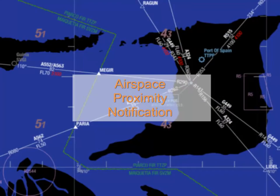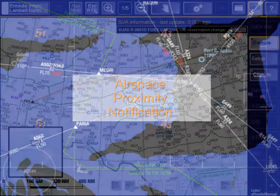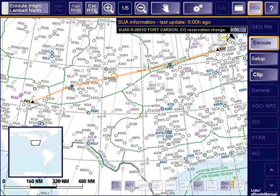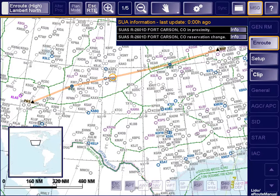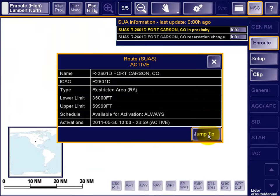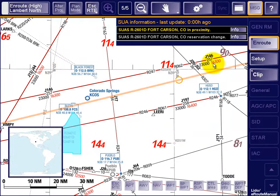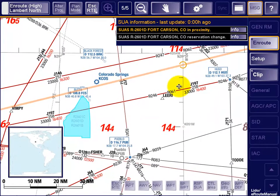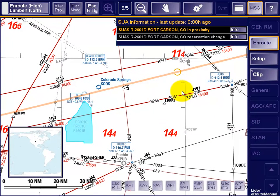The airspace proximity notification function, shown next, is made possible only by the availability of the airspace reservation data in E-Route Manual. Some hours further into the flight, when approaching the active SUA, the pilot gets an airspace proximity notification. Note that it does not come from the Event Service, but from E-Route Manual's internal airspace proximity evaluation function, which is in turn enabled by the data received from the SAA web services. In this case, the notification can be disregarded because the planned flight route avoids the active airspace.